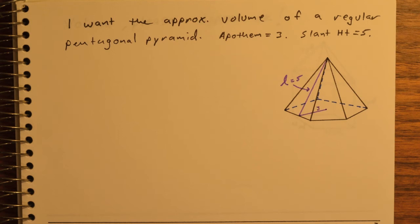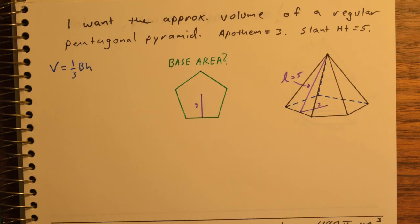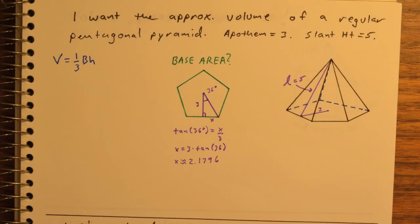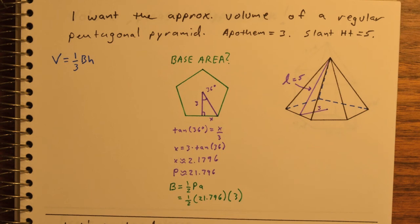Here we want the approximate volume of this regular pentagonal pyramid. The apothem is 3, the slant height is 5. We're using volume is 1/3 base times height formula. We need to find the base area. The base is a regular pentagon. The apothem is 3, and using trigonometry, we can find half of one side length, which means if I double that up and multiply by 5, I'll get a perimeter of about 21.796. I'll use that perimeter to find the area of the base.